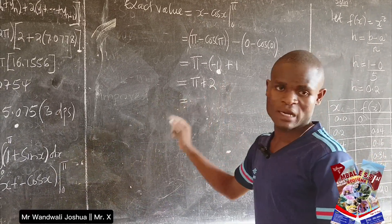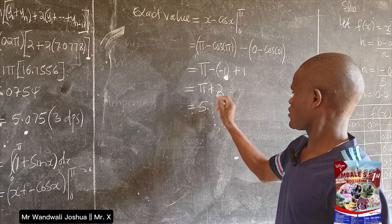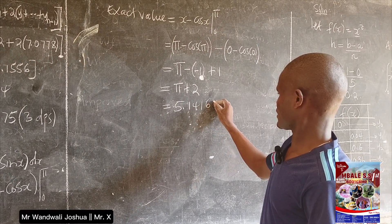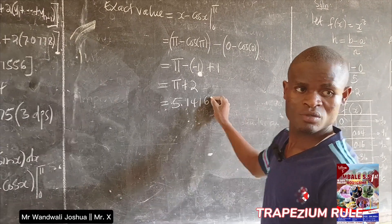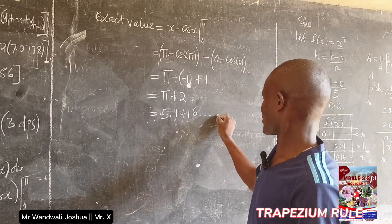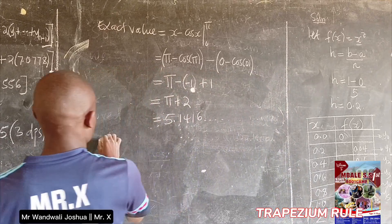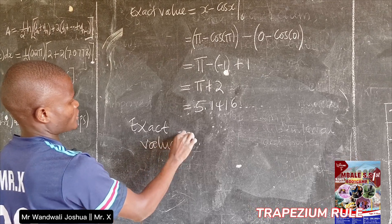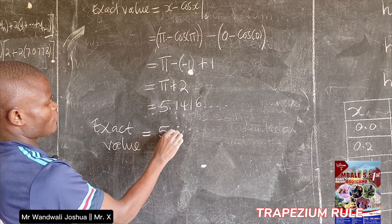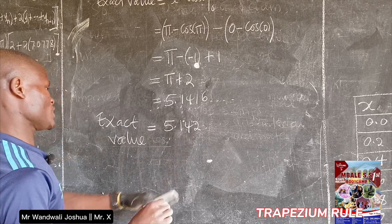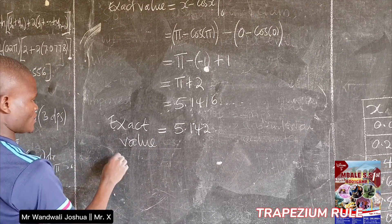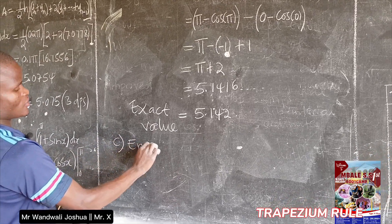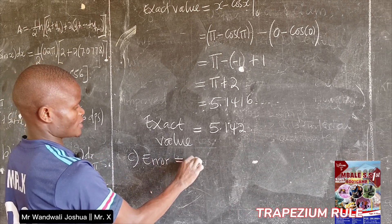Evaluating π + 2 numerically gives 5.14159…, which corrected to three decimal places is 5.142. This is the exact value of the integral.